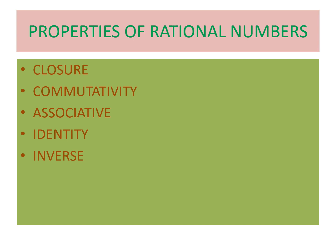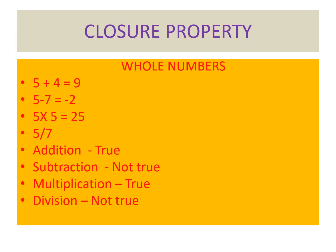In the closure property, we take all four basic operations and check whether the number set is satisfied. For whole numbers: 5 + 4 = 9 (a whole number), so whole numbers are closed under addition. For subtraction: 5 − 7 = −2, which is an integer and not a whole number, so whole numbers are not closed under subtraction. For multiplication: 5 × 5 = 25, a whole number, so multiplication is closed.